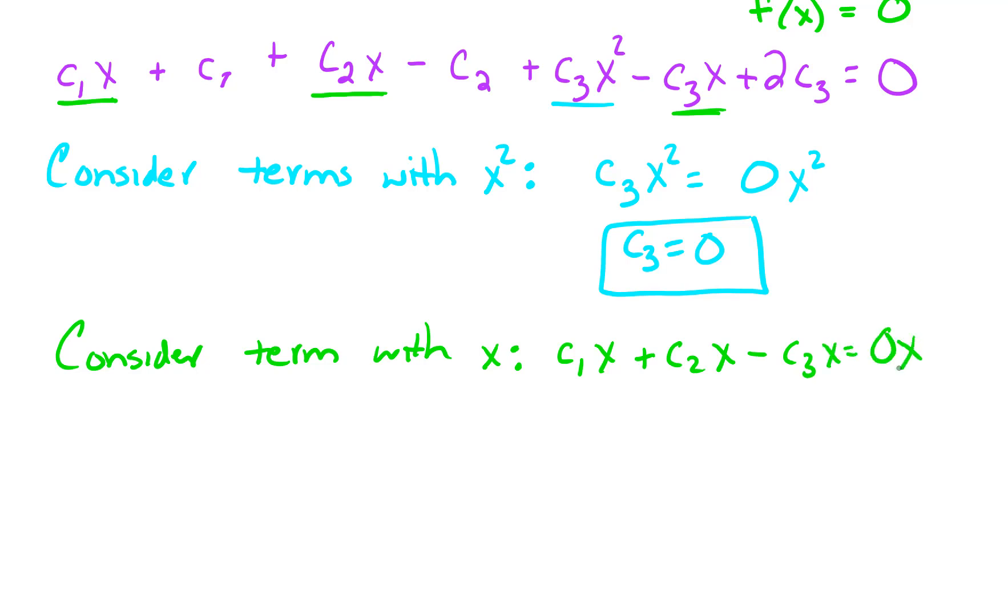After we do a couple of these, we don't have to write down our x's anymore. It's really just a matter of looking at the coefficients. Because this equation is going to have to hold for any x. So these coefficients are going to need to satisfy that equation. We already know that C3 is zero. So now we're down to the point that C1 equals negative C2.